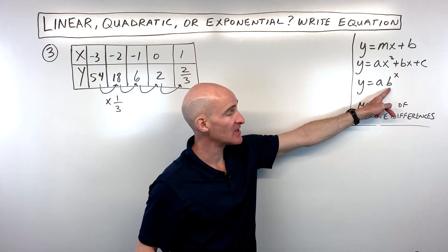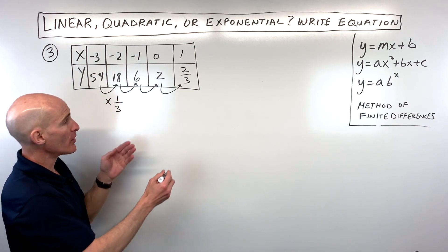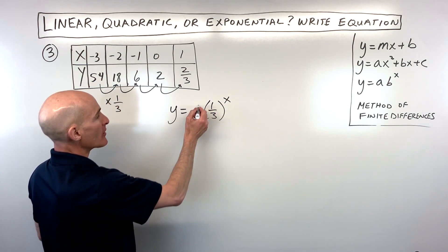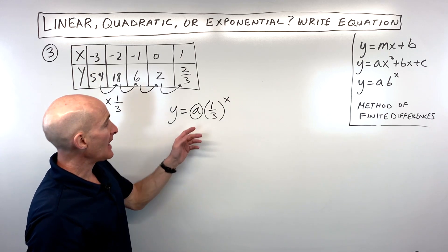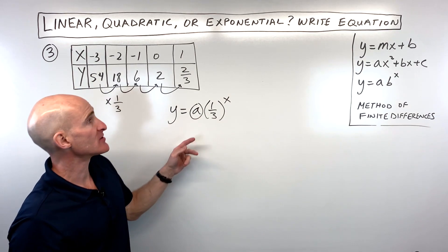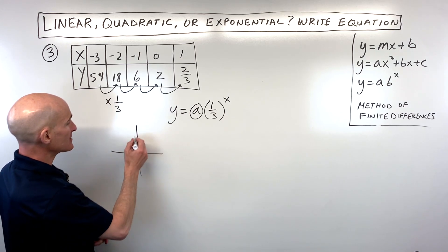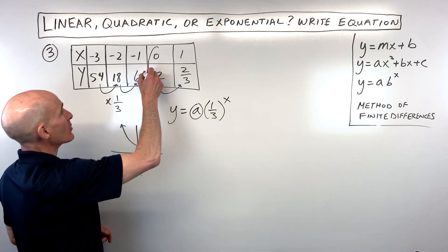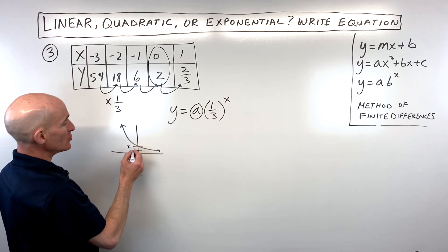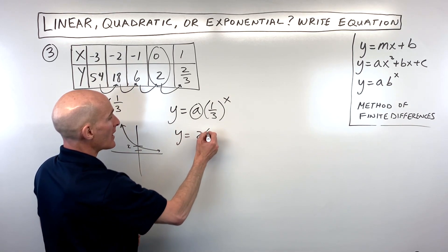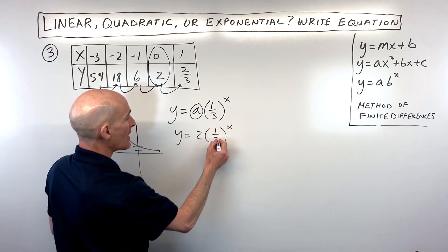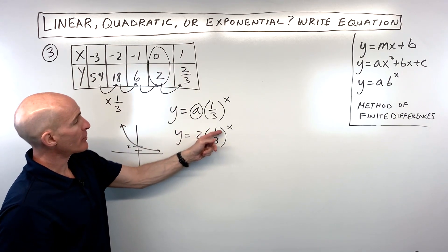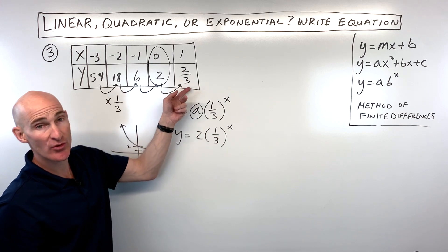So we have y equals a times (1/3) to the x power. The a is the y-intercept — where it crosses the y-axis, which is when x equals 0. At x equals 0, y equals 2, so a equals 2. The equation is y equals 2 times (1/3) to the x power. Checking with x equals 1: (1/3) to the first is 1/3, and 2 times 1/3 is 2/3. That matches the table.